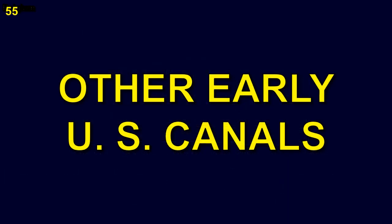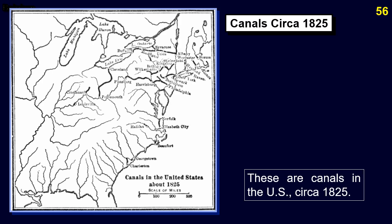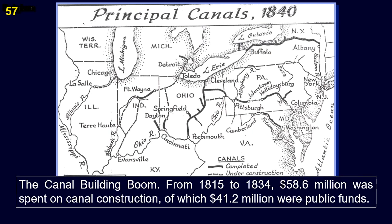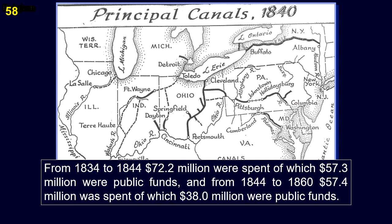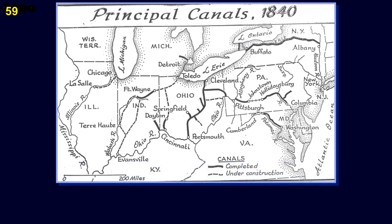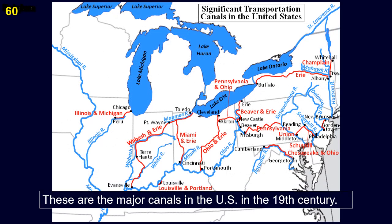Other early U.S. canals: these are canals in the U.S. circa 1825. The canal building boom: from 1815 to 1834, $58.6 million was spent on canal construction, of which $41.2 million were public funds. From 1834 to 1844, $72.2 million were spent, of which $57.3 million were public funds. The problem was that the Erie Canal was the only one that made money. These are the major canals in the U.S. in the 19th century.